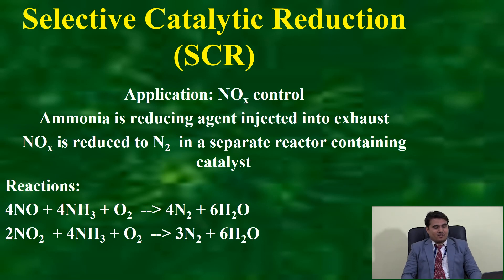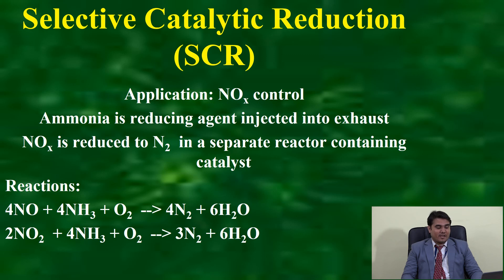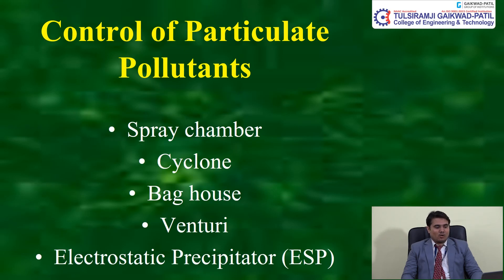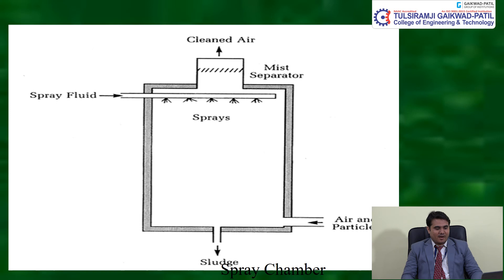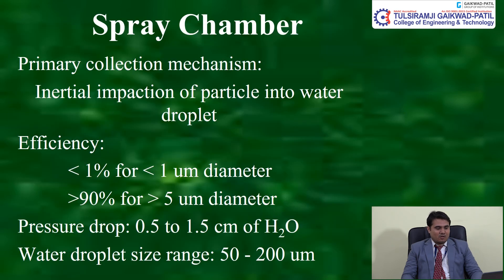Selective Catalytic Reduction (SCR) is used for NOx control, using ammonia as a reducing agent injected into the exhaust. NOx is reduced in a reactor: 4NO + 4NH3 + O2 → 4NO2 + 6H2O, and 2NO2 + 4NH3 + O2 → 3NO2 + 6H2O. For particulate control, spray chambers work by impaction of particles into water droplets. Efficiency is greater than 1% for 1 µm diameter particles, pressure drop is 0 to 1.5 cm H2O, and water droplet size ranges from 50 to 200 µm.